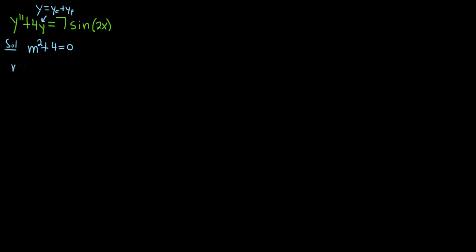Now we can subtract 4 from both sides, which gives us M squared equals negative 4. And we can take the square root, so we get M equals plus or minus 2i.